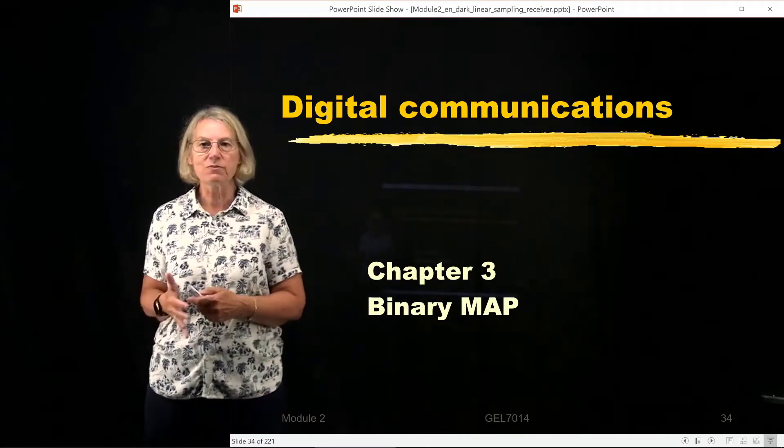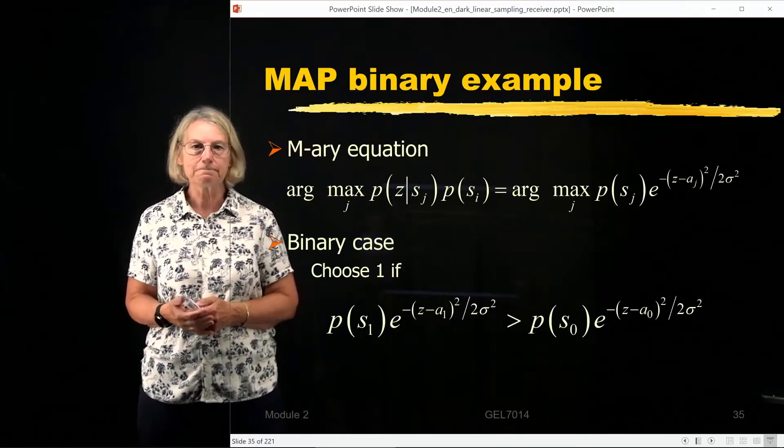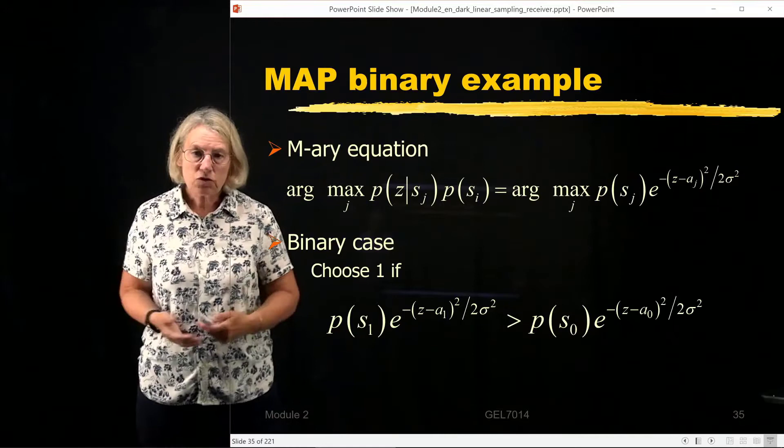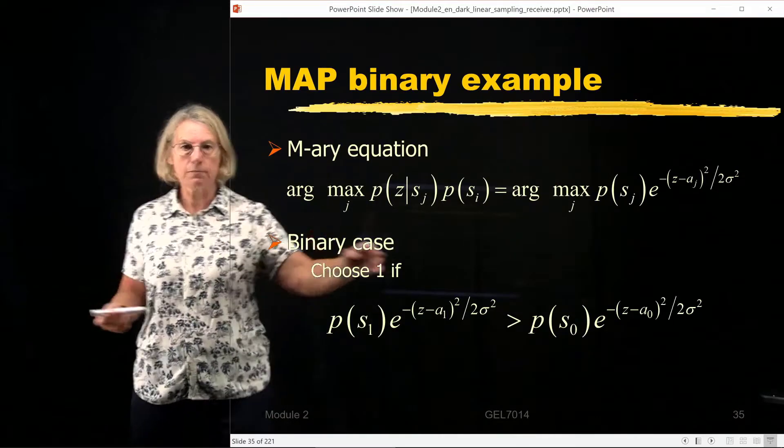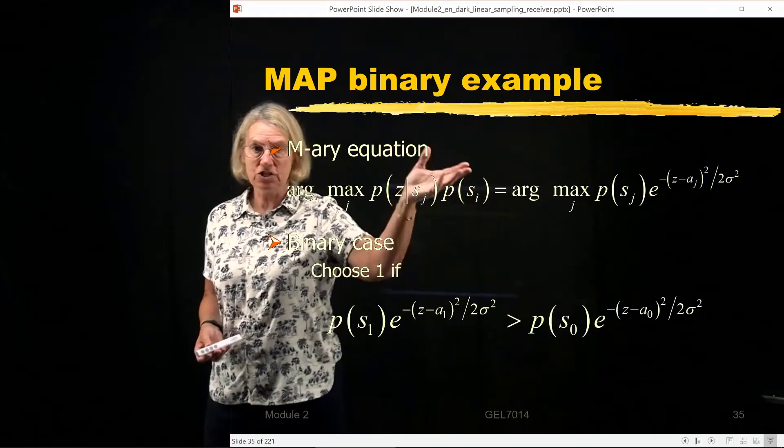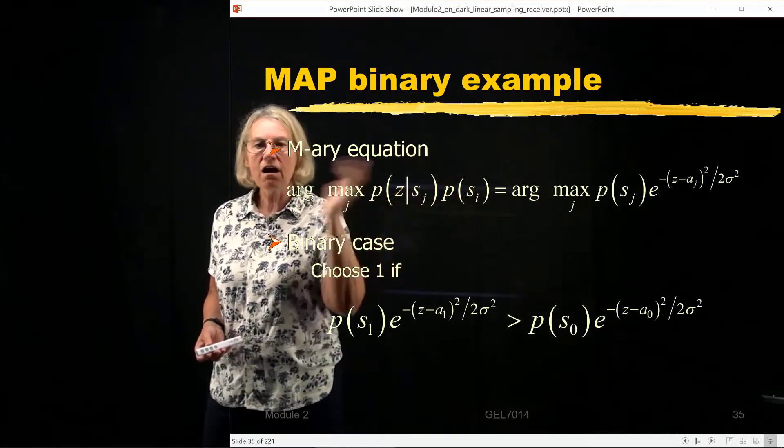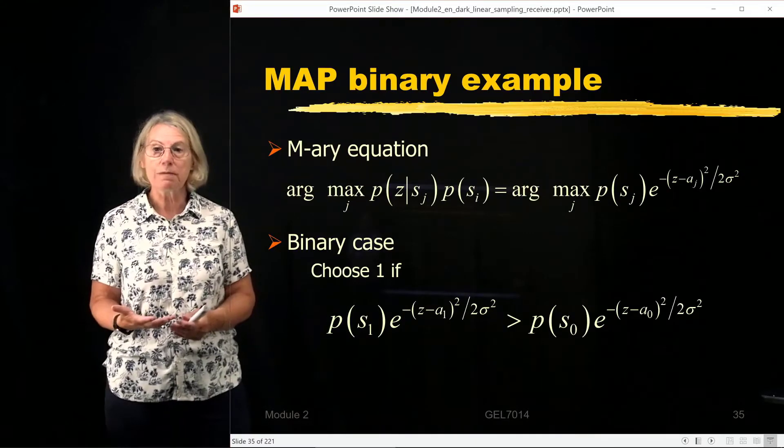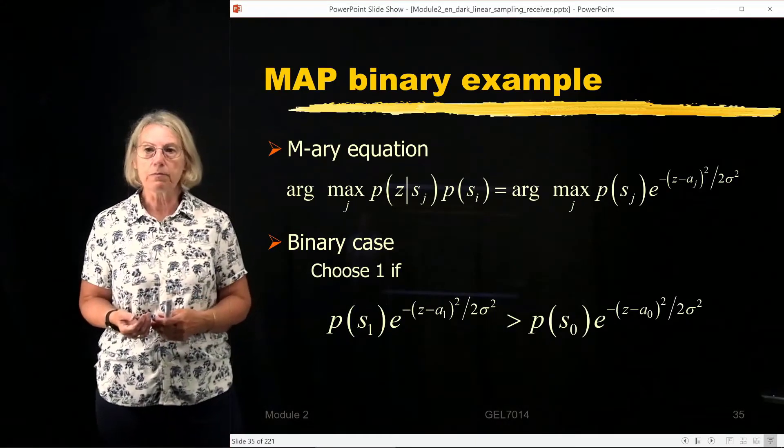Very similar to what we've seen with the maximum likelihood. The decision rule looks very similar except that now we have a multiplicative term, a weighting term, that weights our likelihood function. And this weighting term is the a priori probability.